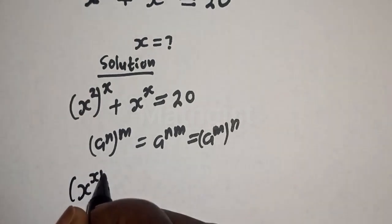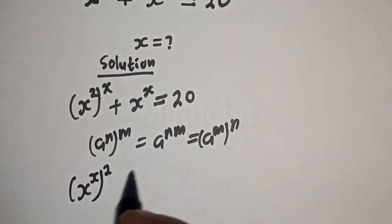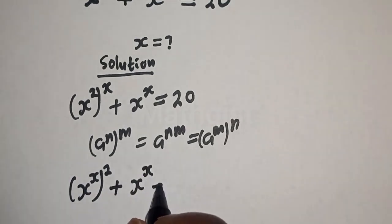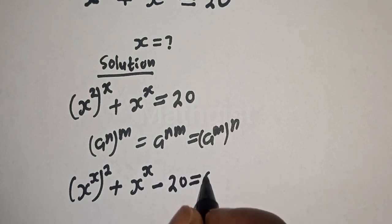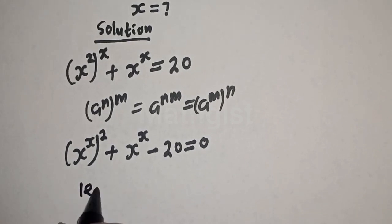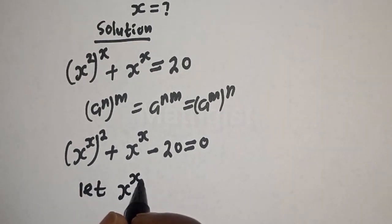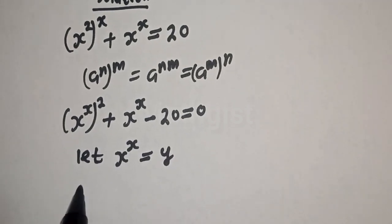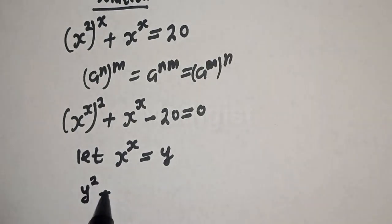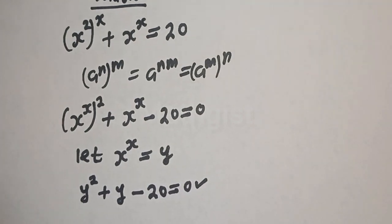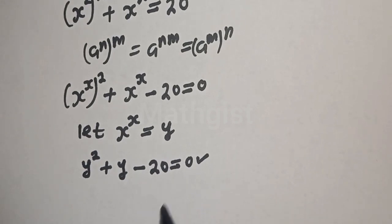This simplifies to s raised to power s squared, plus s raised to power s minus 20 is equal to zero. Now let s raised to power s equal to y, then we have y squared plus y minus 20 is equal to zero. This is a quadratic equation, so let's solve it using the factorization method.